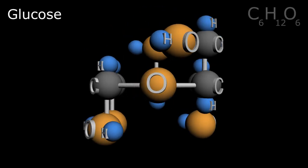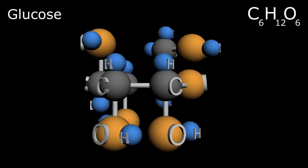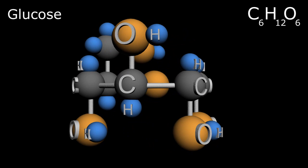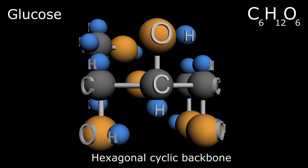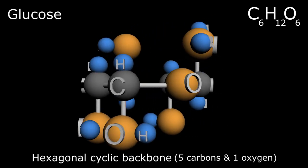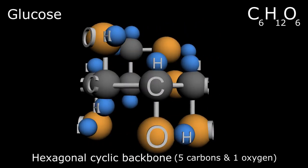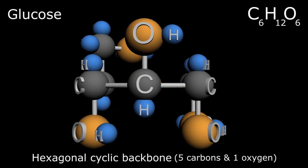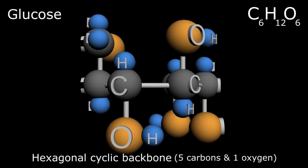With a chemical formula of C6H12O6, the molecule most commonly exists as shown, with a hexagonal cyclic backbone containing five carbons and one oxygen, and various molecules extending off the five carbon atoms, which we will describe in detail momentarily.